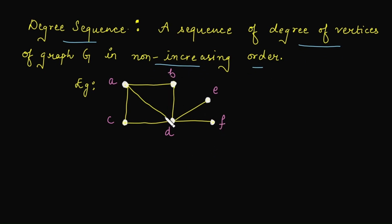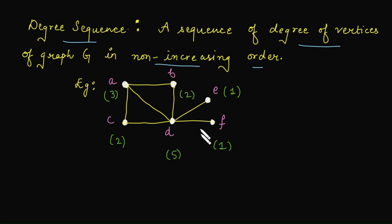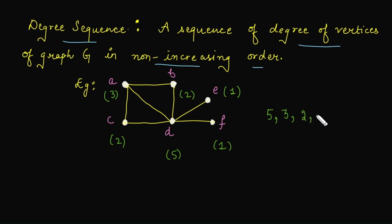For example, let's find the degree sequence for a given graph. The degree of vertex C is 2, degree of vertex D is 5, degree of vertex F is 1, degree of vertex E is 1, degree of another vertex D is 2, and degree of another vertex E is 3. Now arrange these degrees in non-increasing order starting from the highest. The highest degree is 5, then 3, then 2 occurring twice, then 1 occurring twice. There are 6 vertices in the graph, so there are 6 entries in the degree sequence.